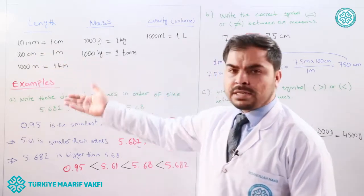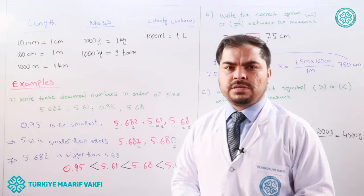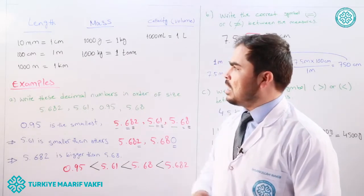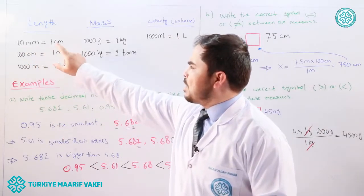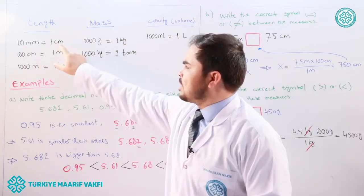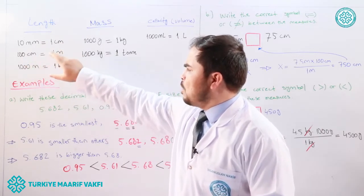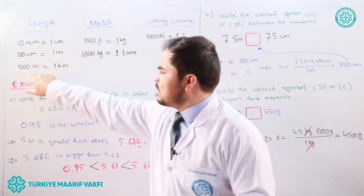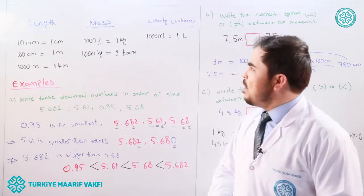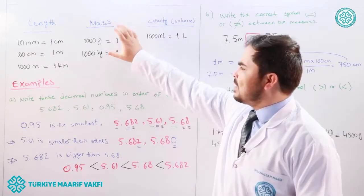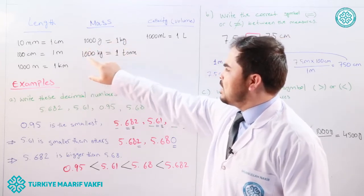For length, we have millimeters and centimeters. Ten millimeters is equal to one centimeter, one hundred centimeters is equal to one meter, and one thousand meters is equal to one kilometer.